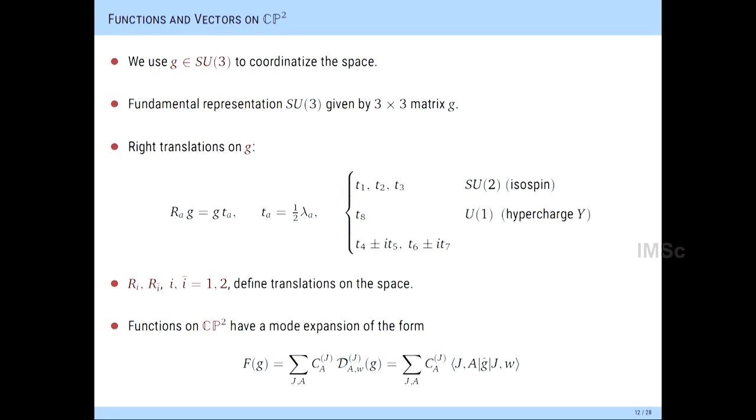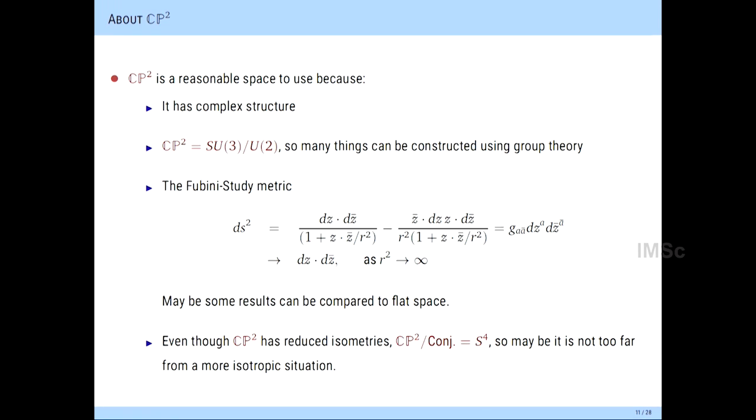Taking CP2 and modding out by conjugation — complex conjugation of the coordinates — gives you S4, a theorem due to Arnold. So at some point it would be useful to use this to get to S4. We take SU(3) to coordinate the space, meaning I have a 3×3 matrix. To get results for S4, one has to ensure that all results are invariant under conjugation of the coordinates, and those results will descend to S4. We haven't carried it out yet, but the topology is different and there could be other non-perturbative effects.